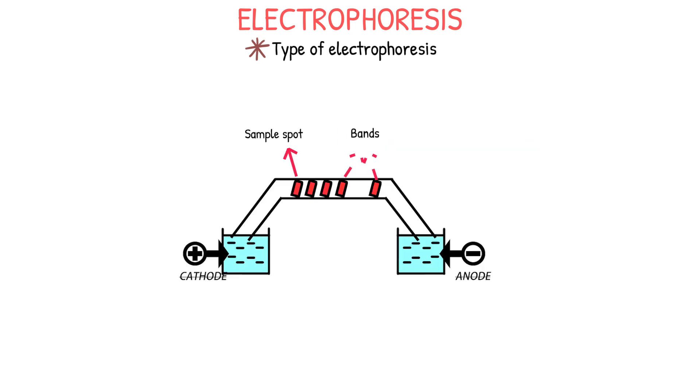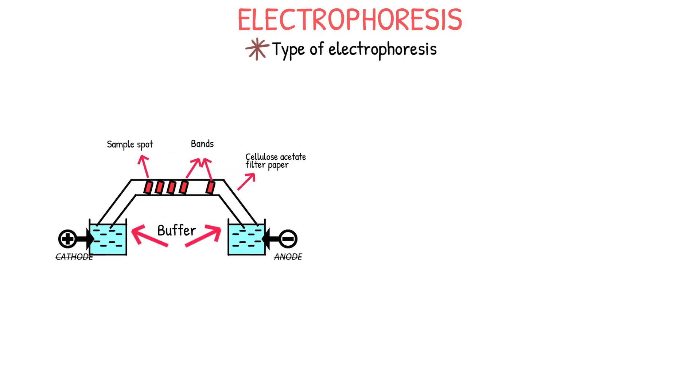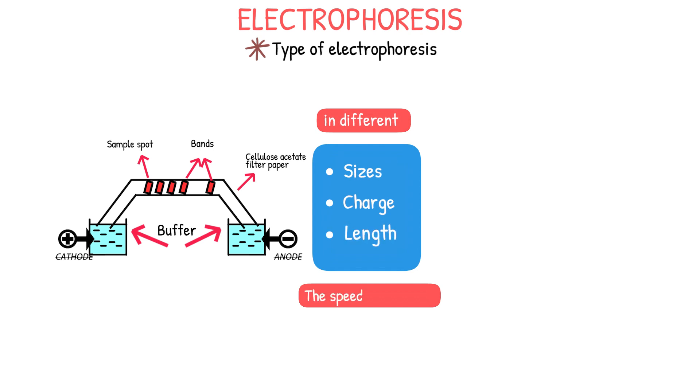Cellulose acetate electrophoresis involves heating a solution of cellulose acetate with a buffer and adding the electrophoresis sample before it cools and solidifies. Then, under the influence of an electric field, the sample moves towards the anode, separating and purifying proteins and other biomolecules. During electrophoresis, molecules with different sizes, charges, and lengths move at different speeds in the cellulose acetate gel, resulting in separation with characteristics such as molecular weight or size distribution. Cellulose acetate electrophoresis is a simple, fast, and low-cost analytical technique.